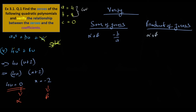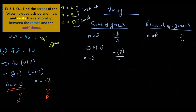Sum of zeros: alpha plus beta equals zero plus minus two, which is minus two. Minus b over a: minus 8 over 4 equals minus two. That checks out.